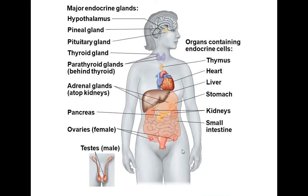The major endocrine glands include the gonads, pancreas, adrenal glands (found on top of the kidneys), parathyroid and thyroid glands, pituitary gland, pineal gland, and hypothalamus. There are also organs that contain endocrine cells, such as the thymus, heart, liver, stomach, kidneys, and small intestine.